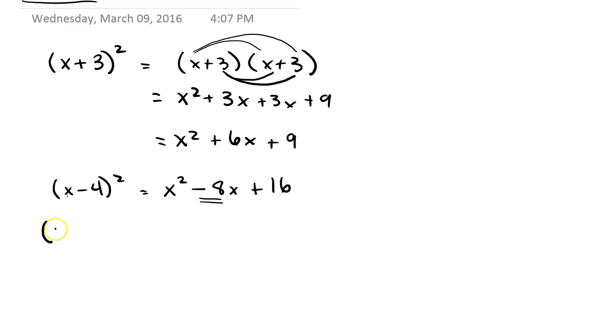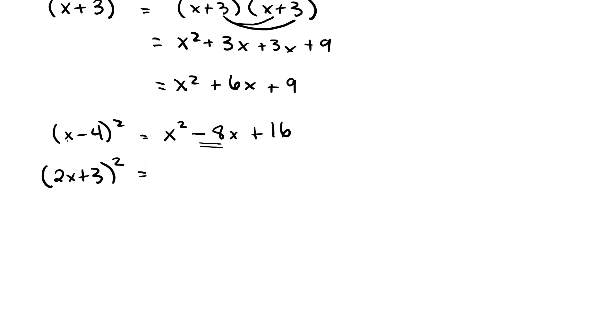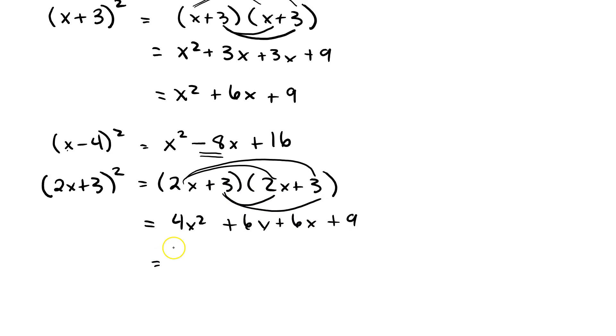What happens when we have (2x+3)²? Let's expand it out and see how the rules apply. (2x+3) times (2x+3) gives us 4x² + 6x + 6x + 9. When I simplify it, that's 4x² + 12x + 9.